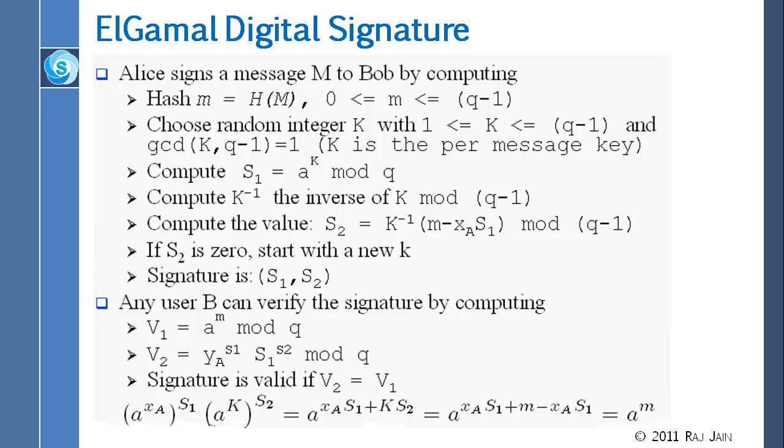If you want to verify the signature, then the way to verify the signature is that you calculate V1, which is a raised to m mod q, where m is the hash, little m is the hash of the message. You take a raised to m mod q, and you could get V2 is equal to YA, which is your public key, raised to S1, and S1 raised to S2 mod q. Now there is a slight confusion, and I just want to make sure you understood, that there are two mods here. Sometimes we say mod q, sometimes we say mod q minus 1. So you have to be careful which line you are on. So here we are mod q. If V1 equal to V2, then the signature is valid.